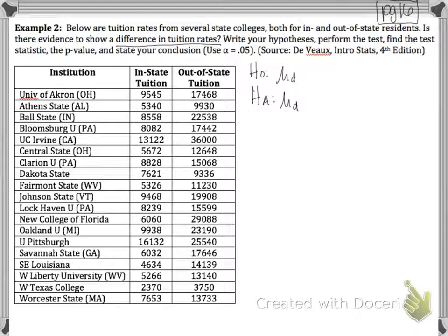So at some point, we're going to need to pause this video and make sure that that data is in list one and list two. So right above in-state tuition, I'm going to put that in list one, and out-of-state is in list two.